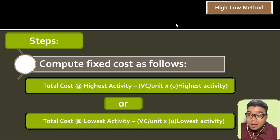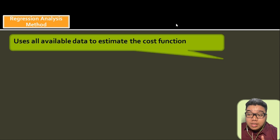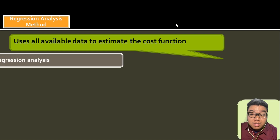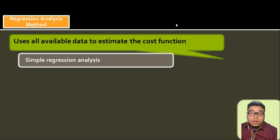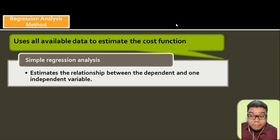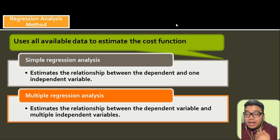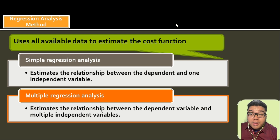Now we go to regression analysis, which uses all available data to estimate the cost function. Simple regression analysis examines the relationship between one dependent variable and one independent variable. Multiple regression estimates the relationship between a dependent variable and multiple independent variables.